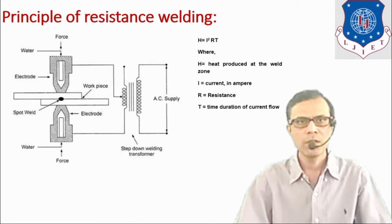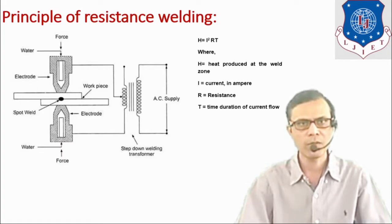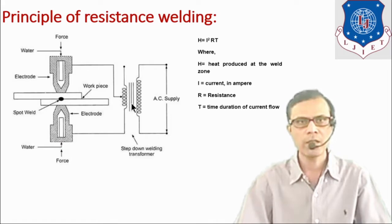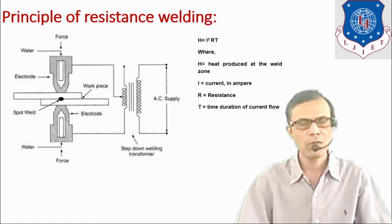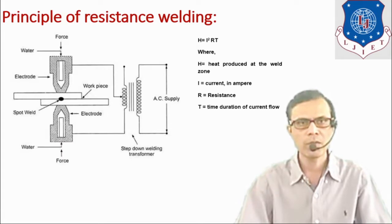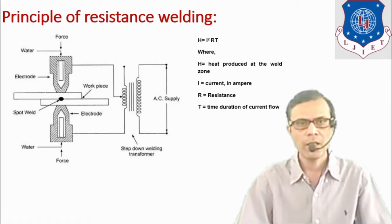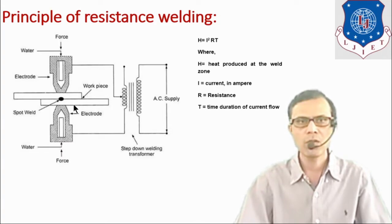In this diagram the principle of resistance welding is shown. The equipment used is a transformer. The function of the transformer is to step down or step up the voltage, and by that way it can increase or reduce the current passing through the circuit. Here we are using a step-down transformer with AC supply. These two electrodes are made of copper, and these are the two workpieces which we want to weld.